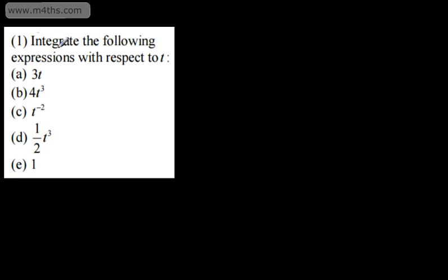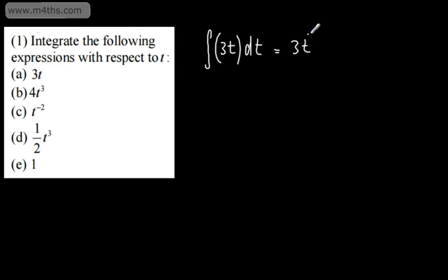We're asked to integrate the following expressions with respect to t. The first one: the integral of 3t with respect to t, written as ∫3t dt. We raise by a power, divide by the new power, and add a constant of integration, giving 3t² divided by 2 plus c. If it were 3x, it would be 3x² divided by 2. Remember, we're not raising 3 to any power — the variable we're integrating with respect to is t.